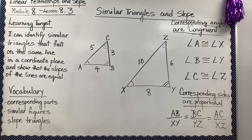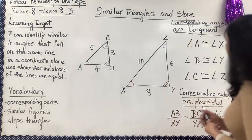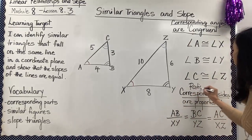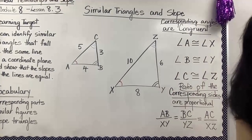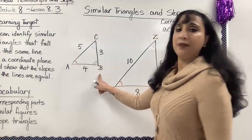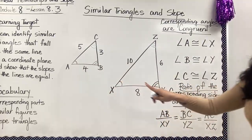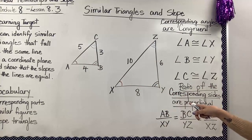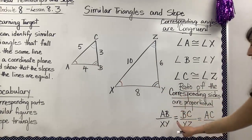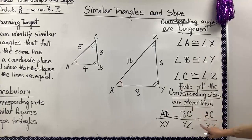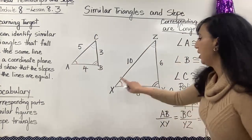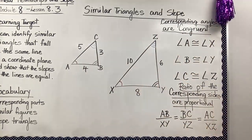If two triangles are similar, their corresponding angles are congruent, and the ratio of the corresponding sides are proportional. So AB over XY equals BC over YZ, and that ratio equals AC over XZ.